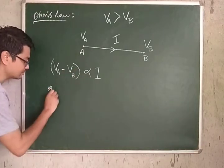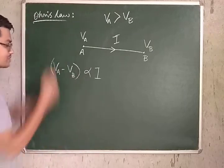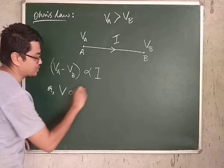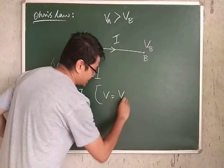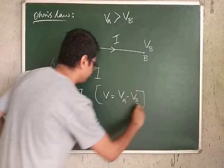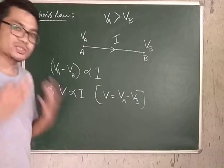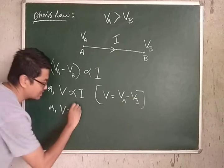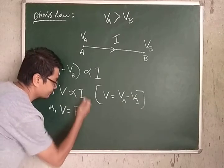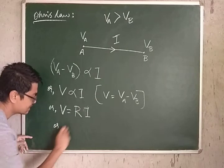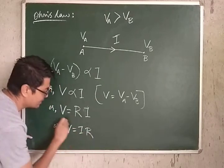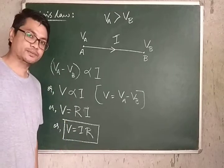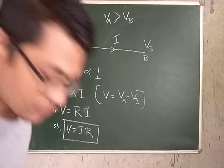The mathematical form of Ohm's law: if we write VA minus VB as V, then V is proportional to I. Replacing the proportionality sign with an equals sign by adding a constant R, we get V = IR, where R is the resistance of the conductor. This is the mathematical form of Ohm's law.